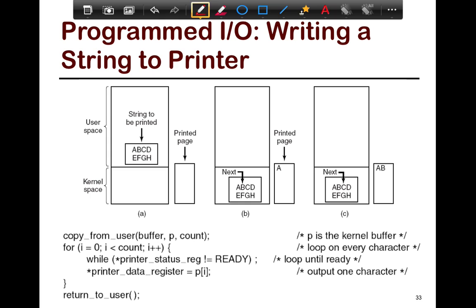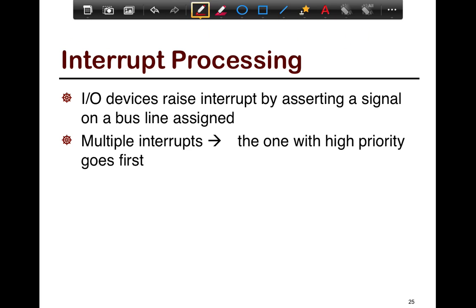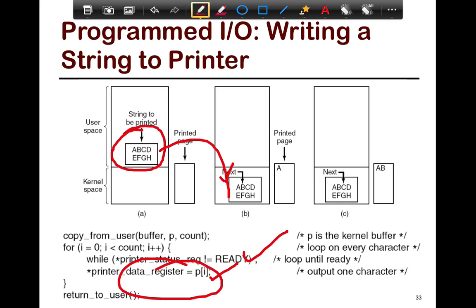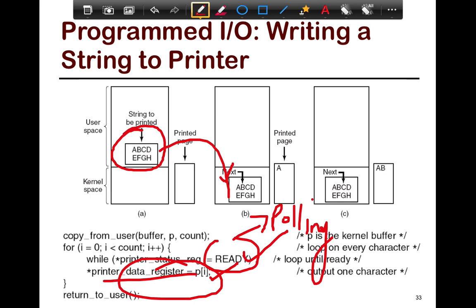Let's look at a program to write a string to a printer. The buffer to be output to the printer is contained in user space. We first transfer it into kernel space, and then the kernel loops over this buffer byte by byte, checking if the printer is ready and putting it out onto the printer. There are two sources of inefficiency: one is that it's done byte by byte, and the other is constant polling to figure out if the printer is ready.